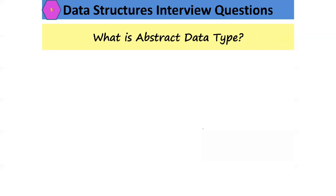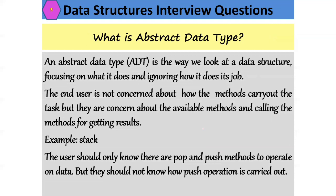What is an abstract data type? An abstract data type, also called ADT, is the way we look at a data structure, focusing on what it does and ignoring how it does its job. Abstraction means hiding implementation details from the end user — we only show the methods and how the user can use them. For example, at an ATM, a person uses methods like balance inquiry and withdraw, but doesn't need to know how those operations are carried out internally.